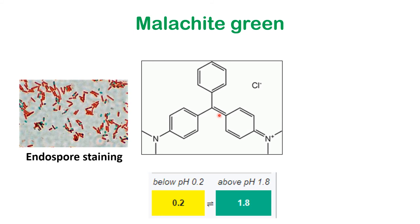Another indicator widely used in microbiology for endospore staining is malachite green. Its structure is triphenylmethane with dimethylamino substitutions at the para positions of two of the three benzene rings. Malachite green is yellow in color at extremely low pH (below 0.2) and green in color above pH 1.8.